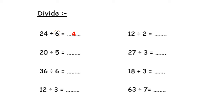Another example — question number 2: 20 divided by 5. Circle the number after the sign. What is the number after the sign here? This is 5. So I will close my fingers and sing the song of table 5 until I get 20. 5, 10, 15, 20. So the answer will be four — you open four fingers, so the answer will be four.